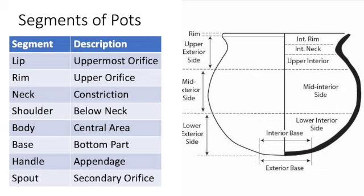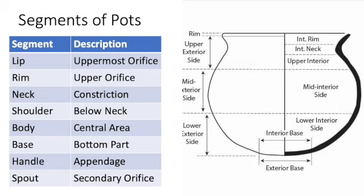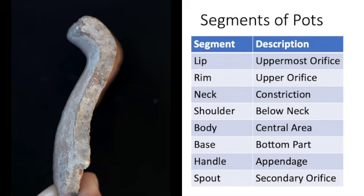Although there's some variation from project to project, archaeologists have a vocabulary for describing the segments of pots, starting at their lip or rim at the top, down to the base at the bottom. Other common segments are handles and spouts.